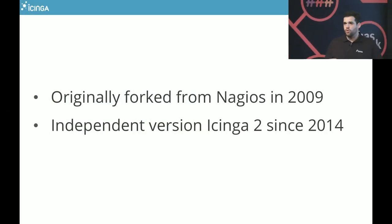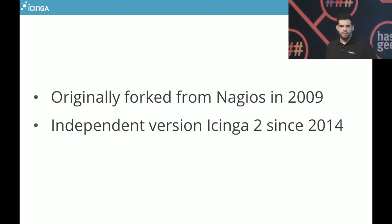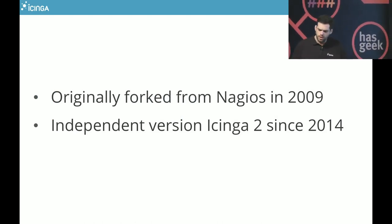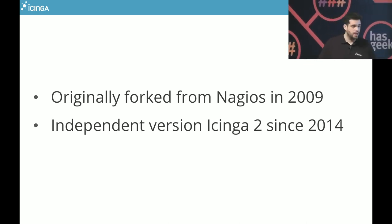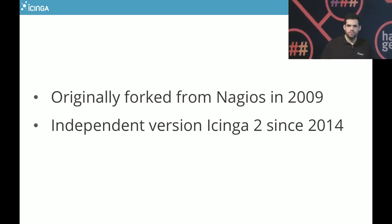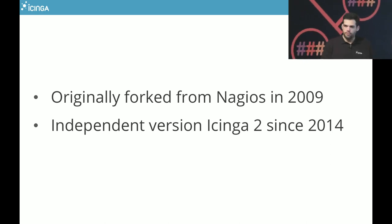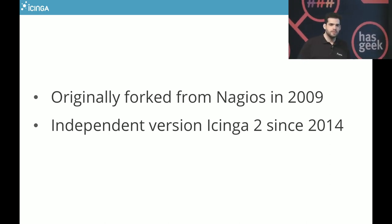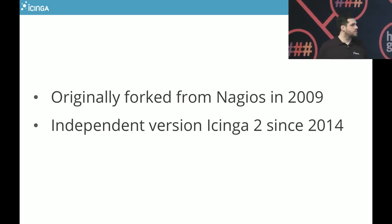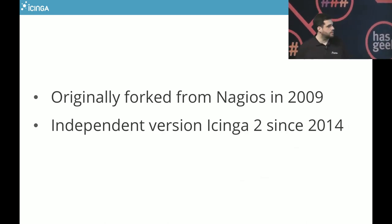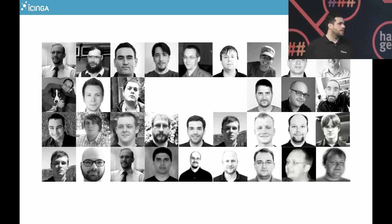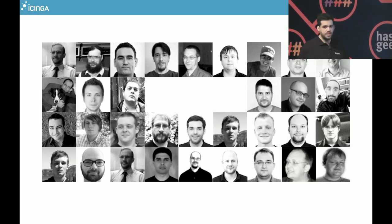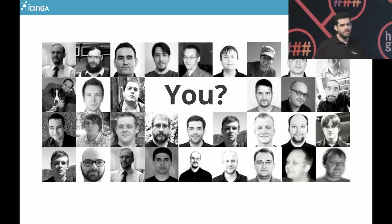Originally we took the Nagios codebase in 2009 — at that time it was Nagios 2. We took the codebase into Icinga 1, which is the fork we've been running for years. But we started in 2013 to develop an independent core redeveloped from scratch, so there is no line of code from the old Nagios style in it. We've had Icinga 2 since 2014. It's a project driven mostly by an international team — a lot in Europe, a couple in the US, Africa, New Zealand, perhaps somebody in India. It's an open source project, you can join.